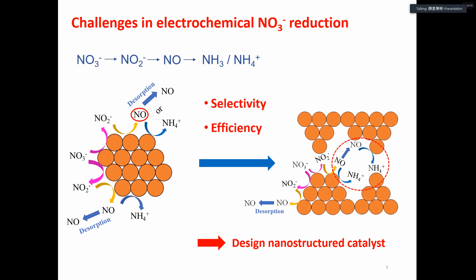In general, nitrate reduction goes through the conversion from nitrate to nitrite, and then to nitric oxide, and then ammonia or ammonium depending on the reaction conditions.